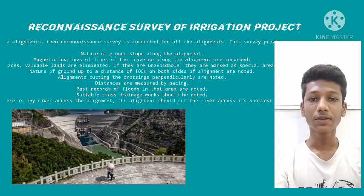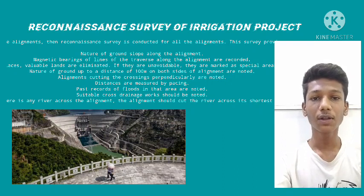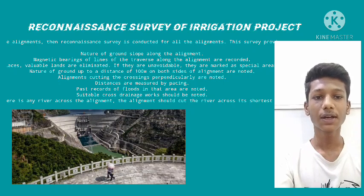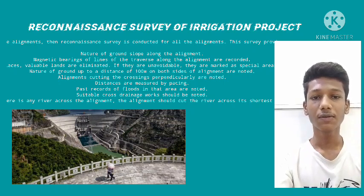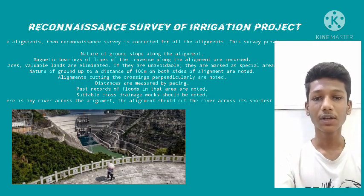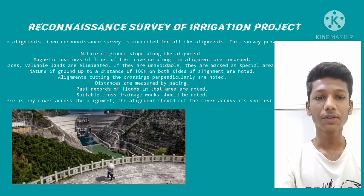Reconnaissance survey of irrigation project. After marking the tentative alignment, the reconnaissance survey is conducted for all alignments. This survey provides the following details: nature of ground slope along the alignment, magnetic bearing of the line, any transfers along the alignment are recorded, alignments passing through religious places or valuable lands are eliminated if possible, and the nature of ground up to a distance of 100 meters on both sides is noted. Distances are measured by pacing, past flood records of the area are noted, and suitable cross drainage works are identified where rivers cross the alignment.